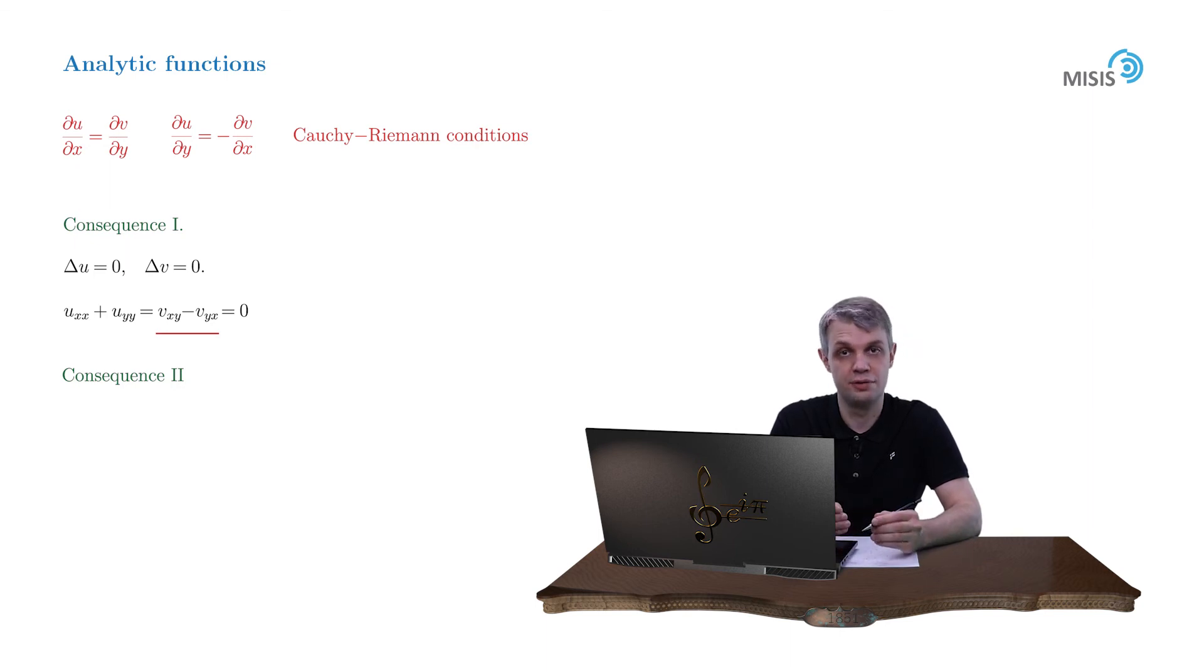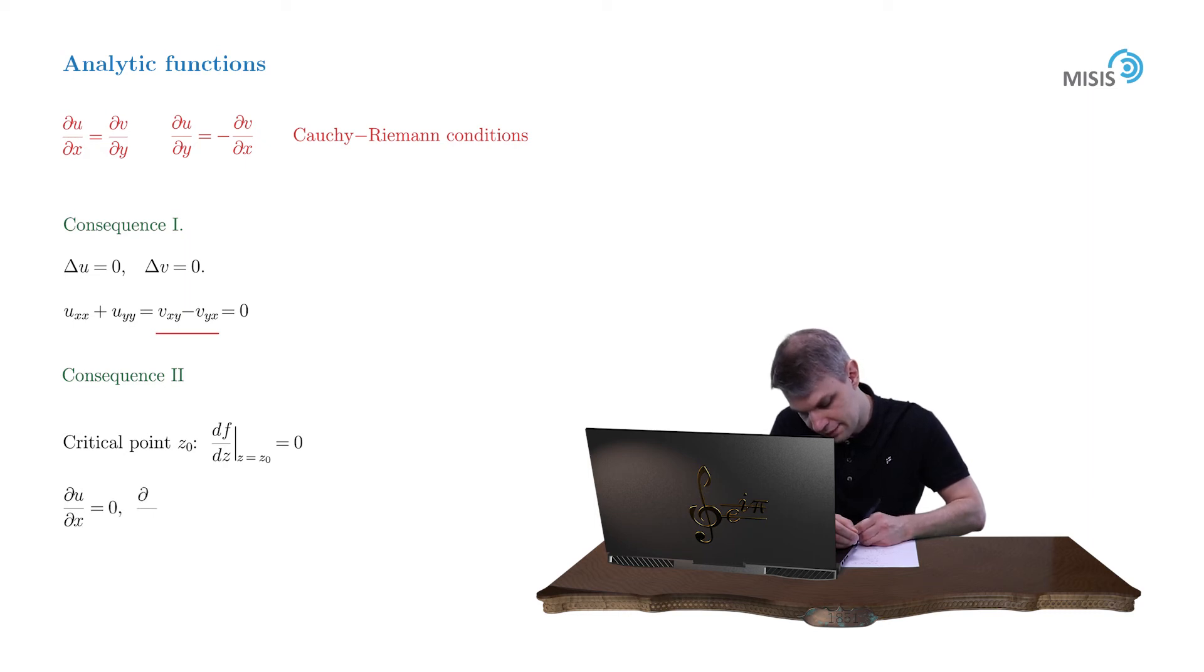First, the point where a complex derivative of a function equals zero is called a critical point. Now let's argue that the critical point of a complex function is in fact the critical point of its real and imaginary parts. Indeed, since the derivative vanishes, we have du/dx equals zero and dv/dx equals zero. But from Cauchy-Riemann conditions we know that dv/dx equals minus du/dy, so du/dy also vanishes. That means this point is also a critical point of function u, and the same goes for function v.